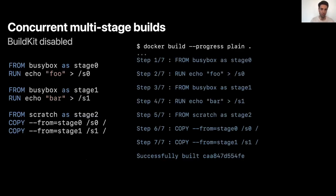Let's talk about multi-stage builds. On the left side of this slide, you can see a very simple Dockerfile containing three different stages. The last stage depends on the first one and the second one, but the second one doesn't depend on the first one. When you run a classic Docker build, it will execute each step sequentially — first stage one, then stage two, and then stage three.